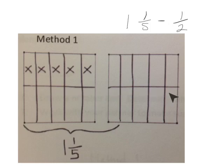we divide both fraction models into halves so that we now have tenths. We subtract 1 half, leaving us with 1, 2, 3, 4, 5, 6, 7 tenths. So with our fraction model, we see that our answer is 7 tenths.